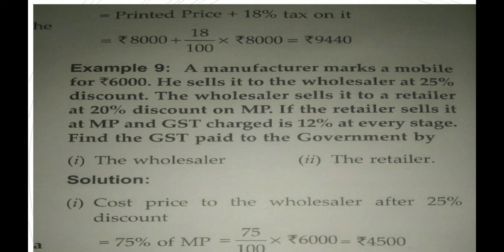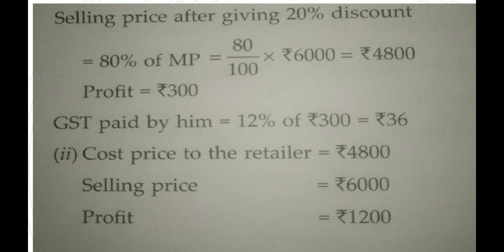Cost price to the wholesaler after 25% discount = 75% of MP = 75/100 × Rs. 6000 = Rs. 4500. The wholesaler sells at 20% discount on MP, so selling price = Rs. 4800. Profit = Rs. 300. GST paid by the wholesaler = 12% of Rs. 300 = Rs. 36.